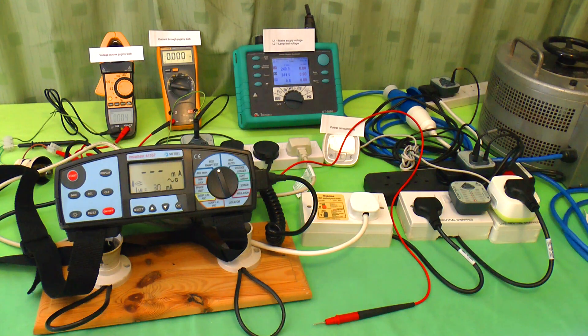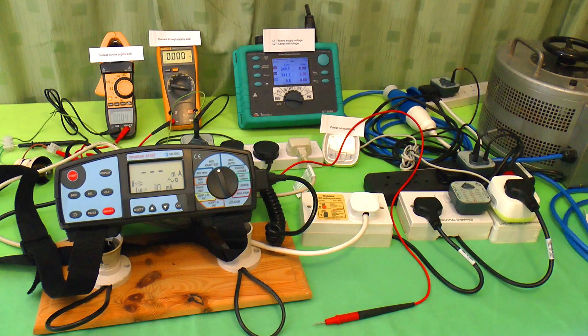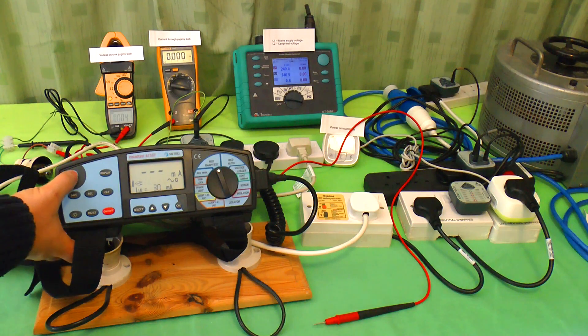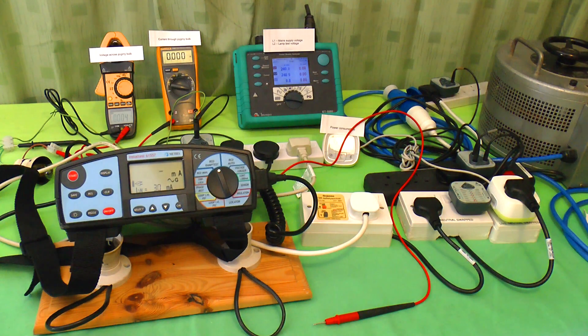Now, normally all of the current flowing in through the live wire flows back out through the neutral. If you touch something live, such as a cut lawn mower cable or a faulty appliance, some of the current will flow through you instead. Any more than a couple of milliamps and the RCD trips.